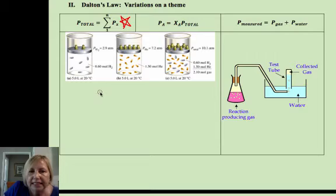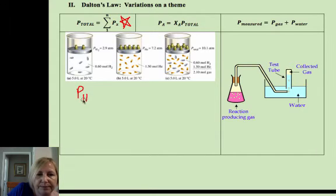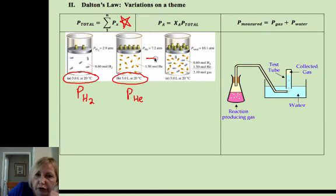And what this example is showing you is I have a pressure of hydrogen and I have a pressure of helium. And as long as we keep the systems at the same volume and temperature, because if I change volume and temperature, I'm changing those pressures.